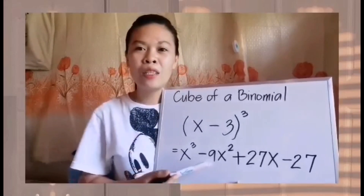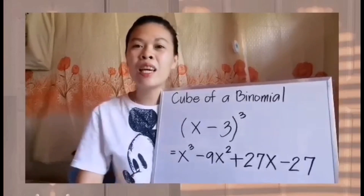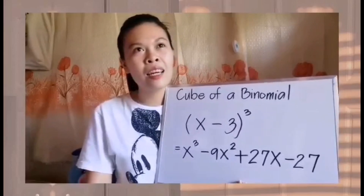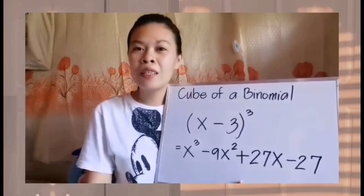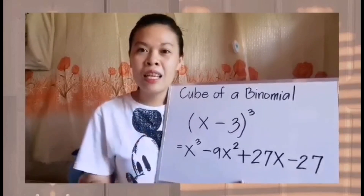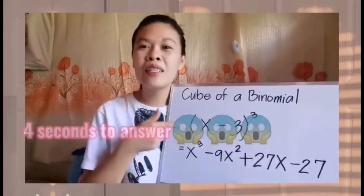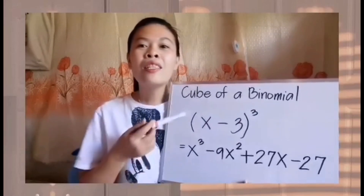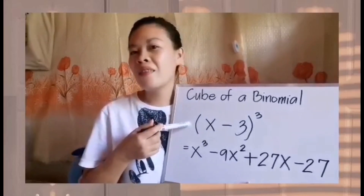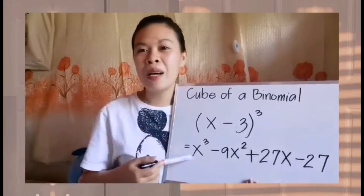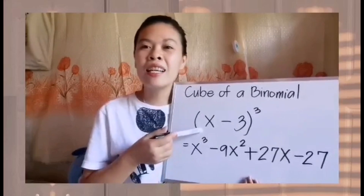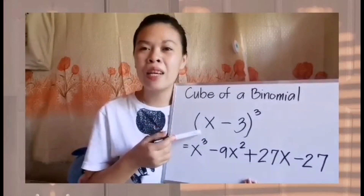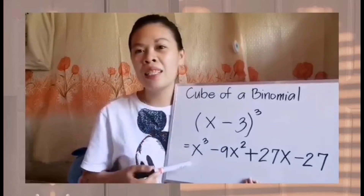So we have 4 terms, meaning to say we will have 4 easy steps to follow. So we have our first step: get the cube of the first term, positive x. So x times positive x times positive x equals x cubed.